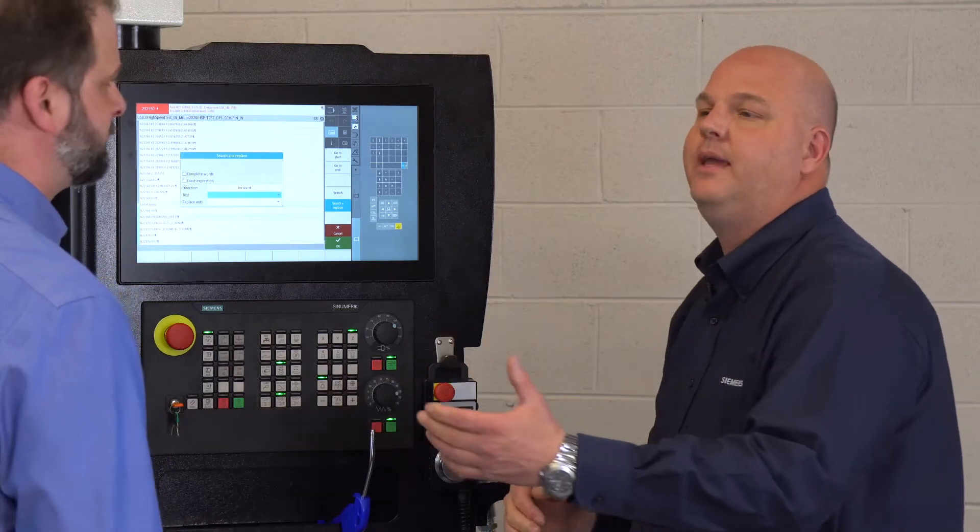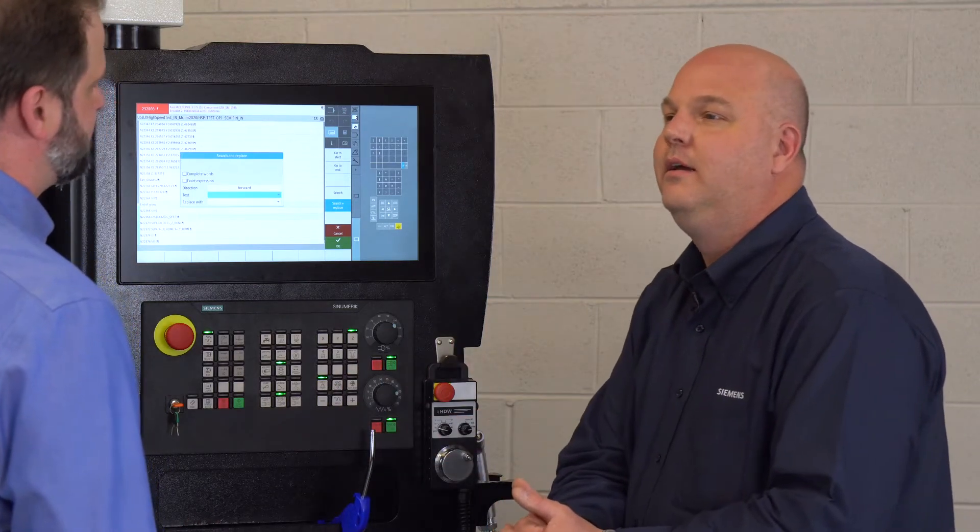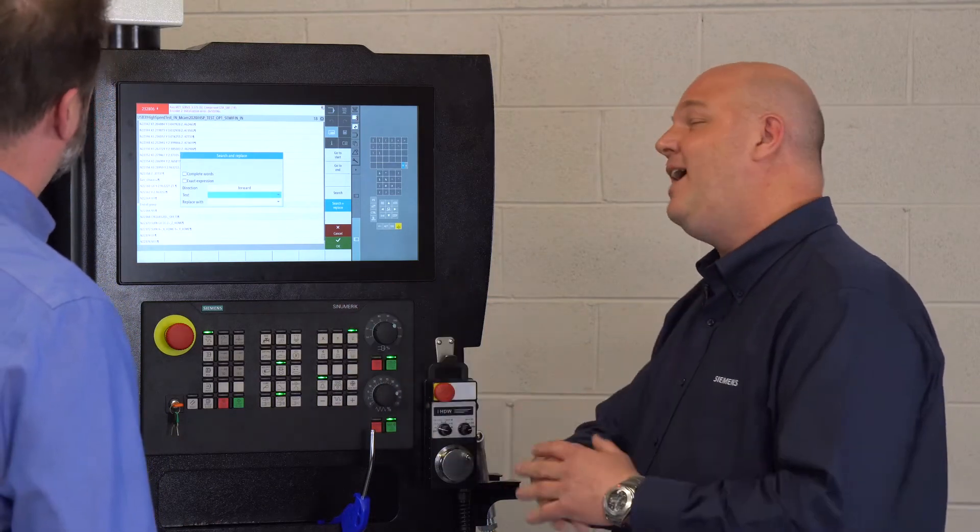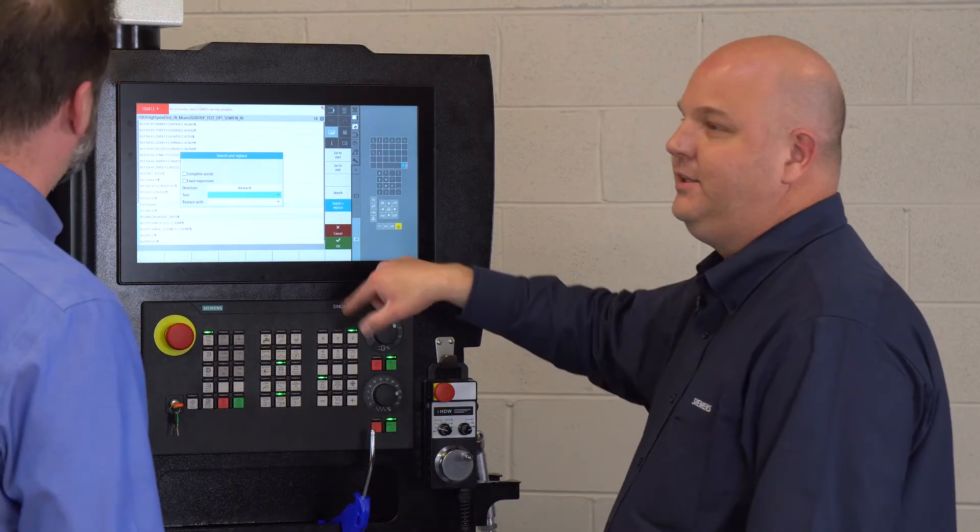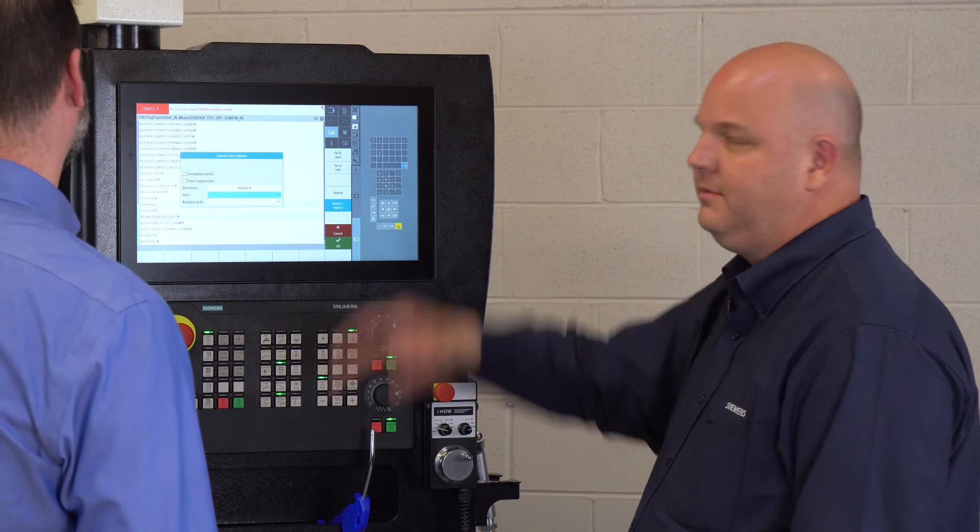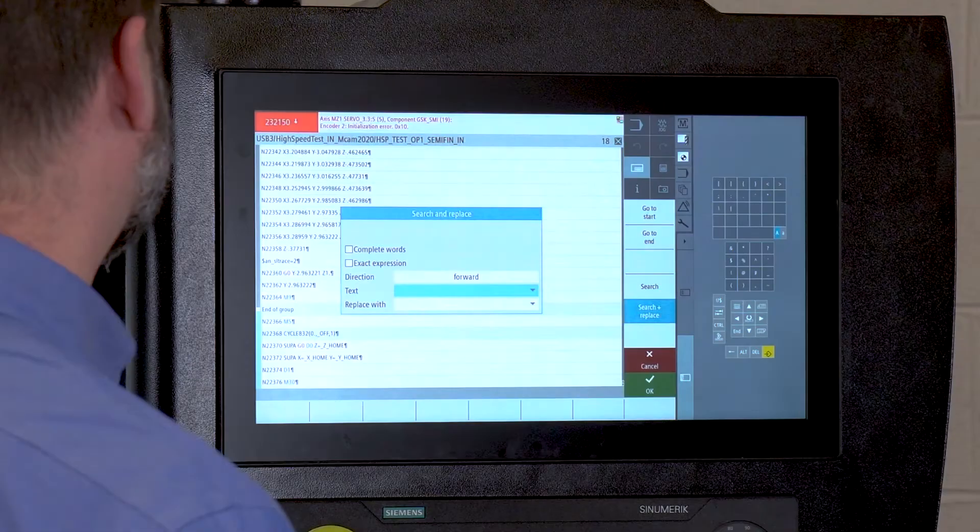But I can also do search and replace. You got that program down from the CAM system. What do they always like to do with feed? Program feed everywhere, right? You got a thousand feed commands. How do you edit that at the control? You normally can't. Find and replace. Boom. It updates all thousand feed rates and away you go.